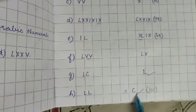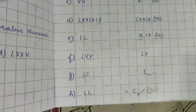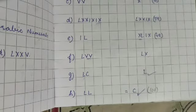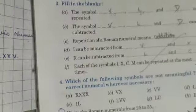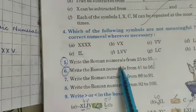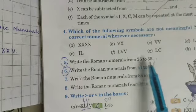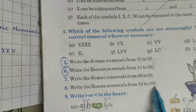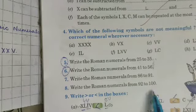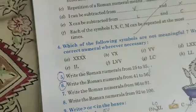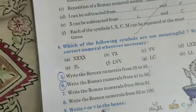So now question number five and six. This is question number five and six, simple. Write the Roman numerals. So you have to write the counting 25 to 35, 41 to 56, 86 to 91, and 92 to 100. Now the next one is write bigger or smaller. These are the symbols you have to put in the box.